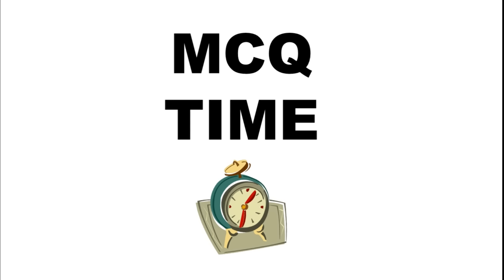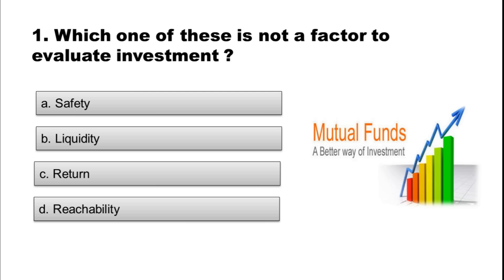Now it is MCQ time. We have covered the whole chapter. Try to solve all 10 MCQs quickly. Question 1: Which one of these is NOT a factor to evaluate investment? Option A: Safety. Option B: Liquidity. Option C: Return. Option D: Reachability.